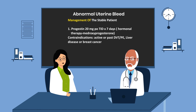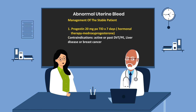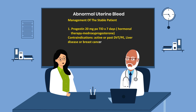For the stable patient, we can start with progestin in the emergency room. The patient is discharged with progestin (medroxyprogesterone) 20 milligrams by mouth three times a day for seven days. Contraindications include active or past DVT or PE, liver disease, or breast cancer.